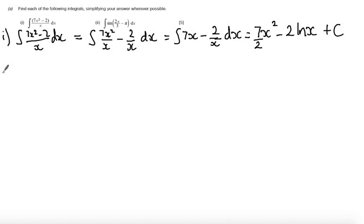So part 2. Part 2 is integrating a trigonometric function. So we're integrating sine of 2x over 3 minus pi.